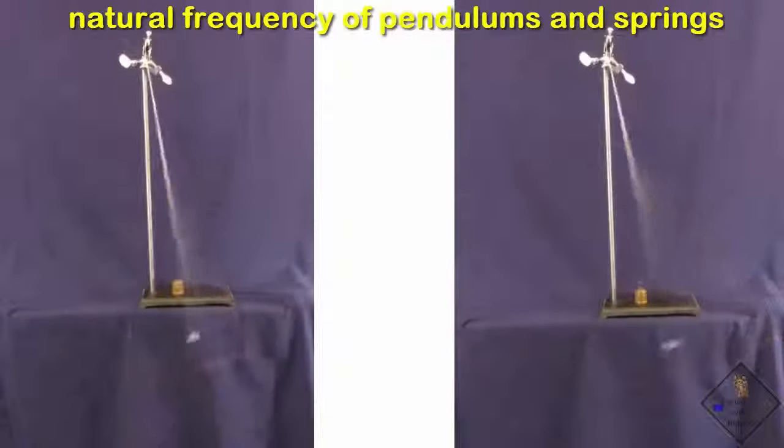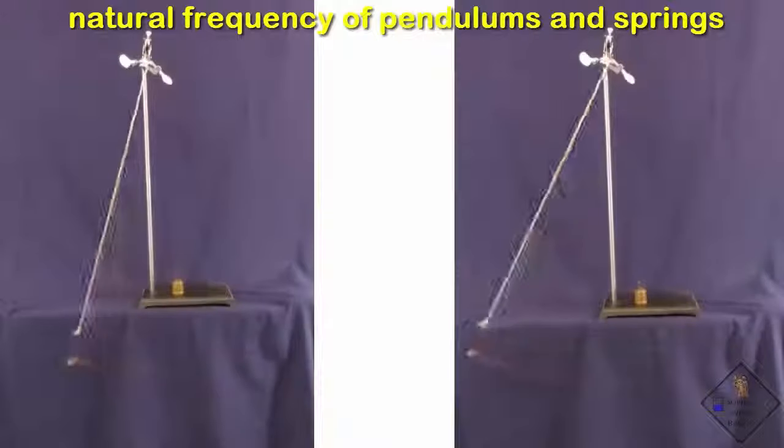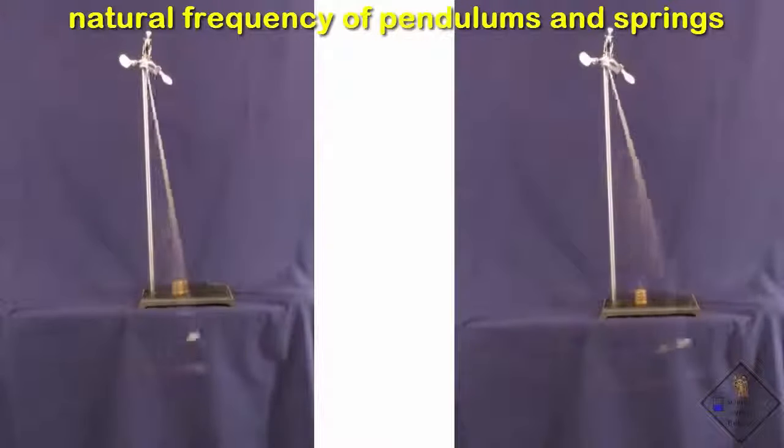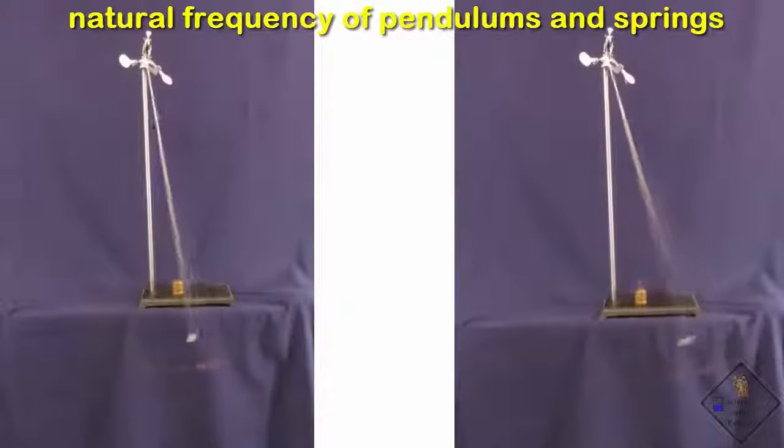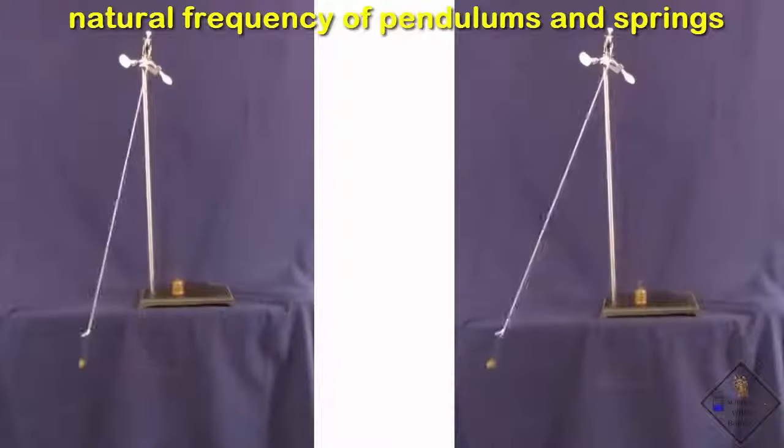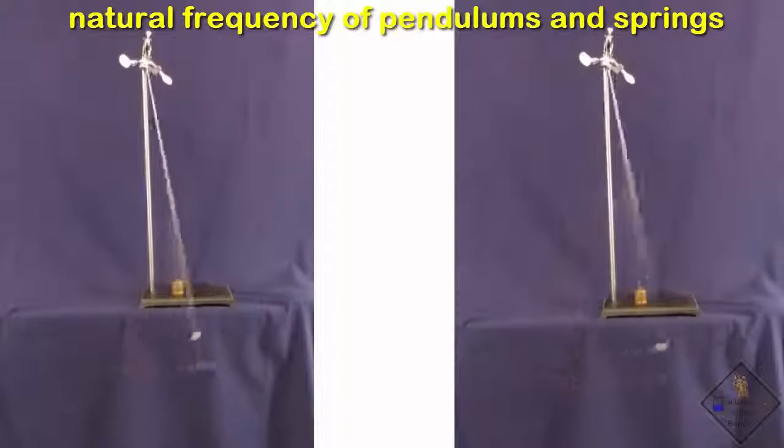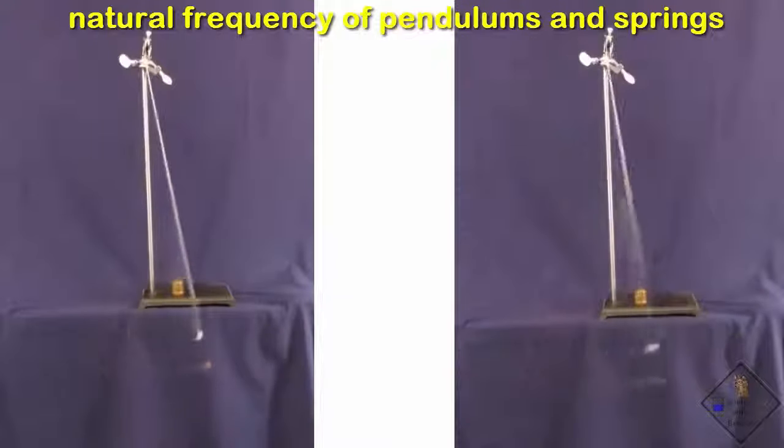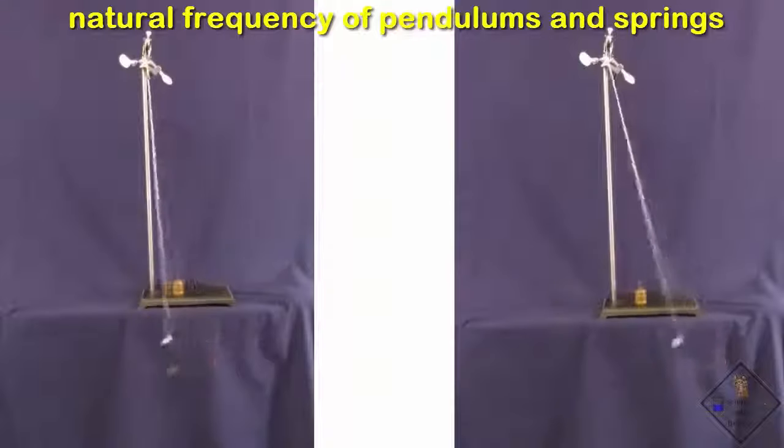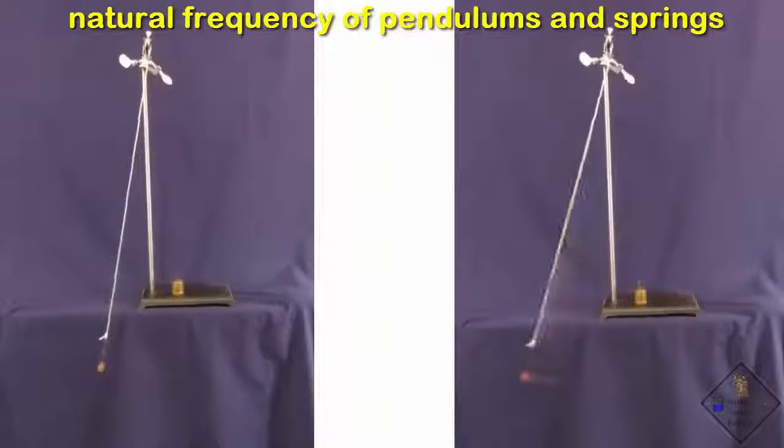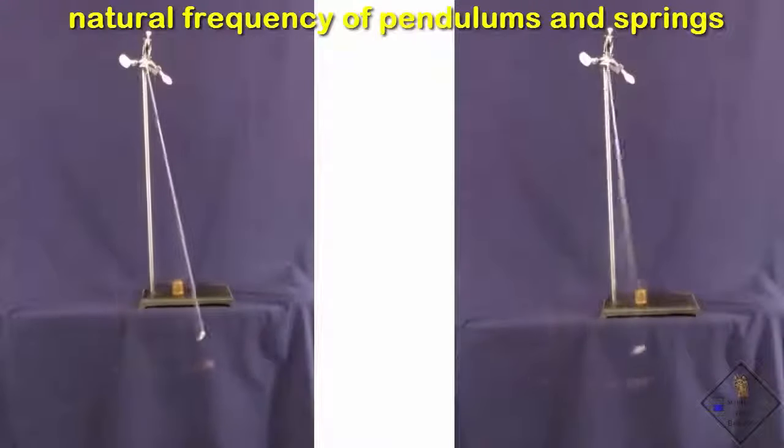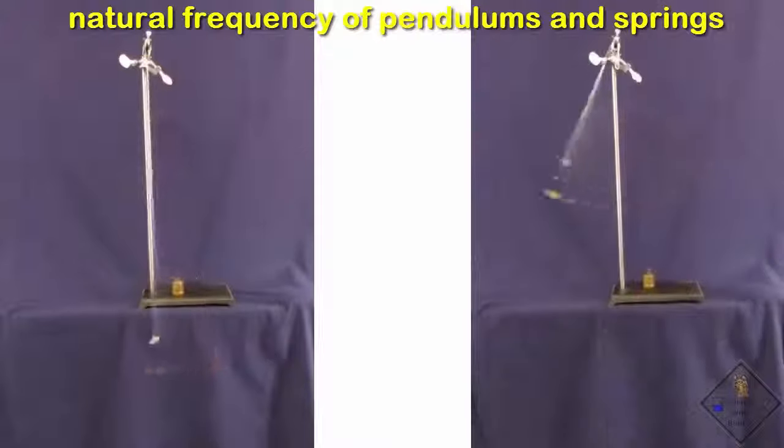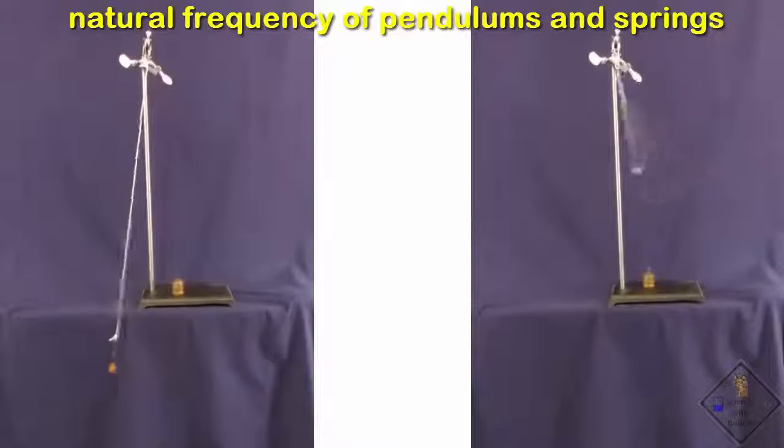Natural frequency? What's that? I know it's weird, but every object has at least one natural frequency. A person swinging on a swing is like a pendulum. It does not matter how far back you pull a pendulum. A pendulum always oscillates at the same frequency. Just like the swing, the only way you can change the resonant frequency of a pendulum is to change the length of the pendulum.